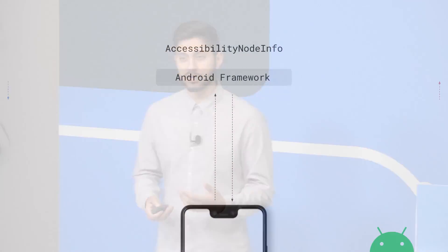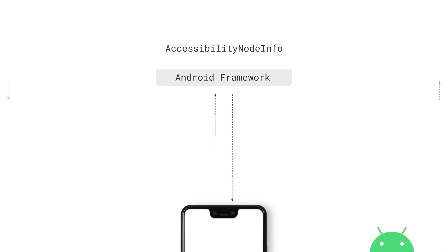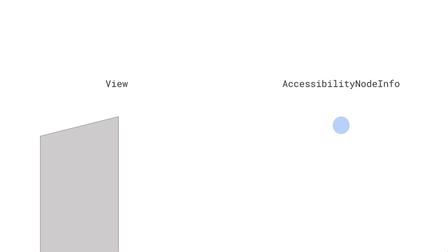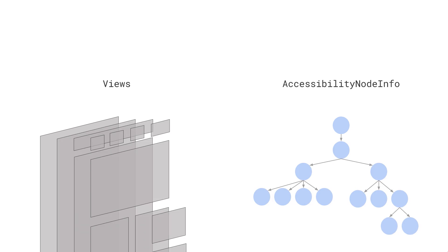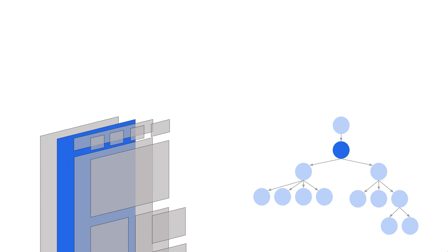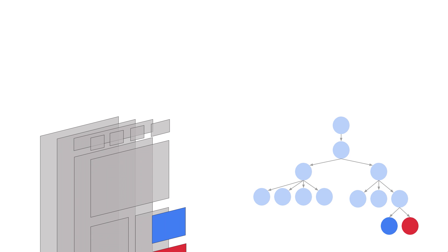Let's go a little bit more in depth on the interface between an application and the accessibility service. There are three core objects. The first is an AccessibilityNodeInfo, which represents what's currently on screen. Each AccessibilityNodeInfo, typically but not always, corresponds to a view. It captures information like position on screen, text, the content description, what you can do to the view, and other state. Taking parent and child relationships into account, you get a node tree similar to a view hierarchy, giving the accessibility service a solid understanding of what's presented on screen.